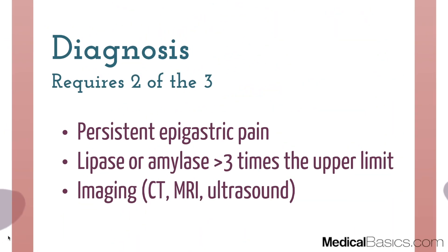The first thing is diagnosis. The most important aspect is that diagnosis really requires two of the three following criteria: one, the classic story of persistent epigastric pain; two, a lipase or amylase greater than three times the upper limit of normal; and three, some type of imaging finding — whether on CT, MRI, or ultrasound. Any two of these three qualifies for the diagnosis.